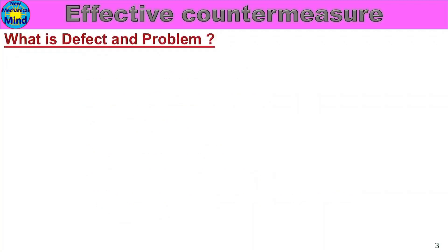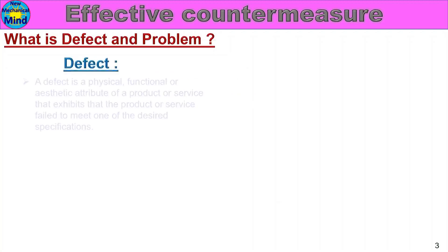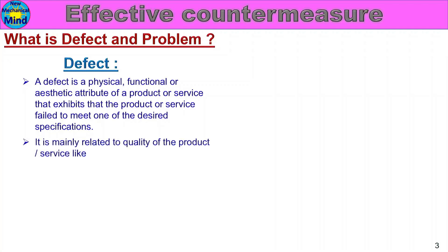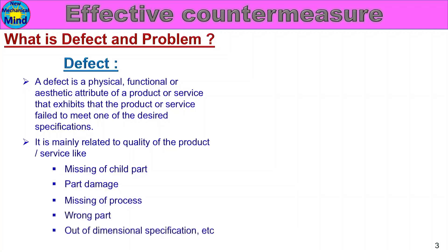First, what is defect and problem? What is defect? A defect is a physical, functional, or aesthetic attribute of a product or service that exhibits that the product or service fails to meet one of the desired specifications. It is mainly related to quality of the product or service. Examples include missing child part, part damage, missing process, wrong part, or out of dimensional specification.